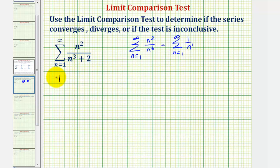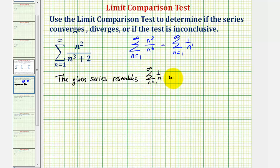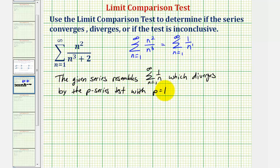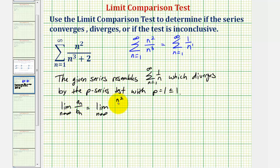The given series resembles the summation from n equals one to infinity of one divided by n, which diverges by the p-series test with p equals one, which is less than or equal to one. So the limit as n approaches infinity of a sub n divided by b sub n equals the limit as n approaches infinity of a sub n — n squared divided by the quantity n cubed plus two — divided by b sub n, which is one divided by n.